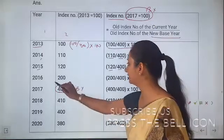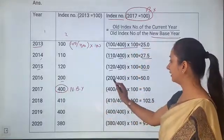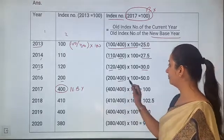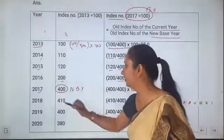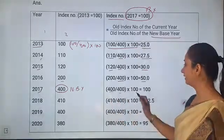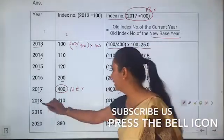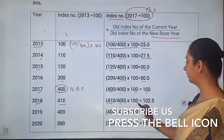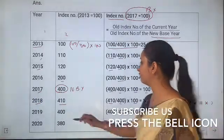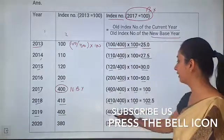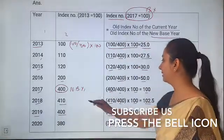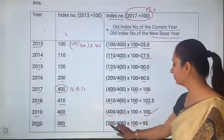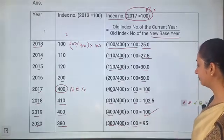For 2016, the current year index number is 200 divided by the new base index number 400, multiplied by 100 — that equals 50. For 2017, current year is 400 divided by 400, multiplied by 100 — that is 100. For 2018, current year is 410 divided by 400, multiplied by 100 — that is 102.5. For 2019, current year is 400 divided by 400, multiplied by 100 — that is 100. For 2020, current year index number is 380 divided by new base year index number 400, multiplied by 100 — that is 95.